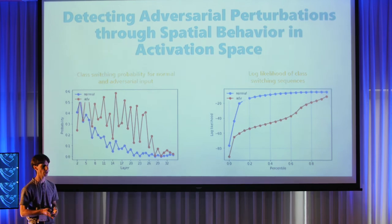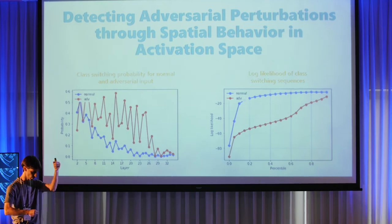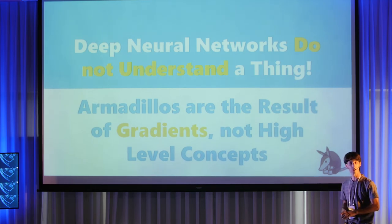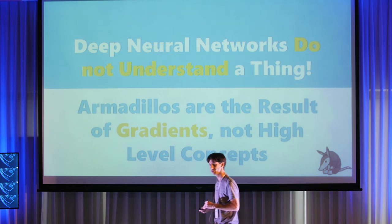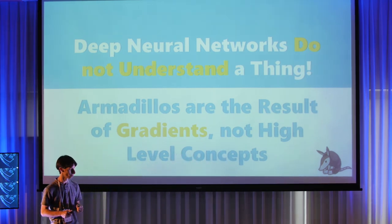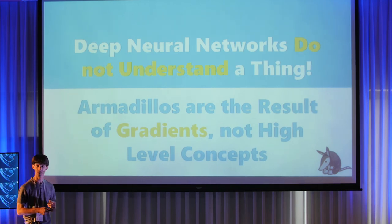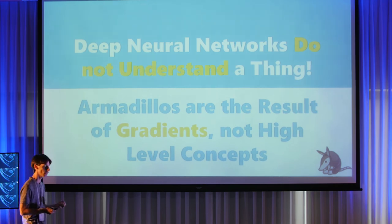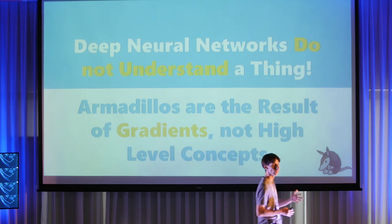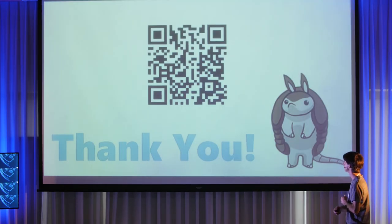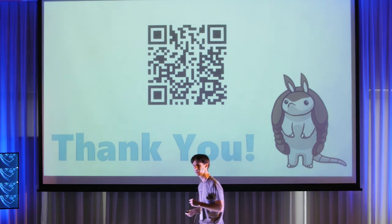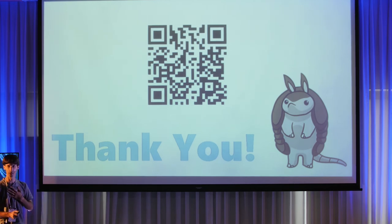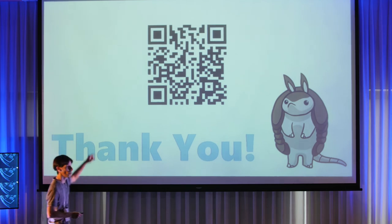Translated to log likelihood, we see a very nice separation that allows us to build a detector reaching 95% accuracy on the Carlini and Wagner attack, which is unprecedented. The take-home message: deep neural networks don't learn anything — it's only in the gradients. And those gradients hide a whole lot of armadillos. To find and block those armadillos, we need to go deep and think about fundamental things at the single neuron or layer level. Thank you very much.